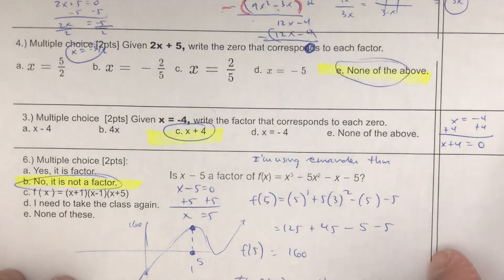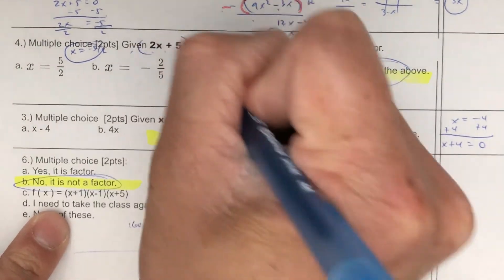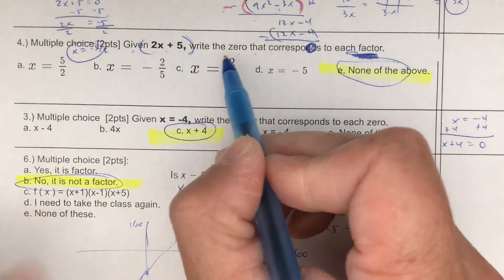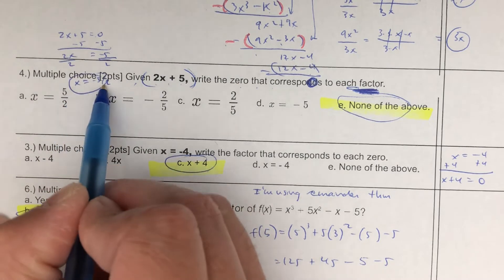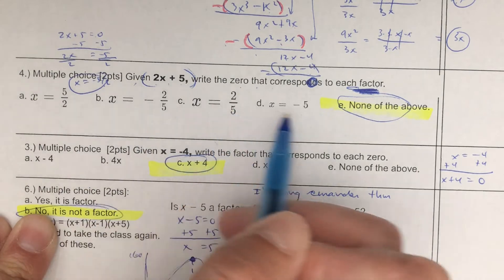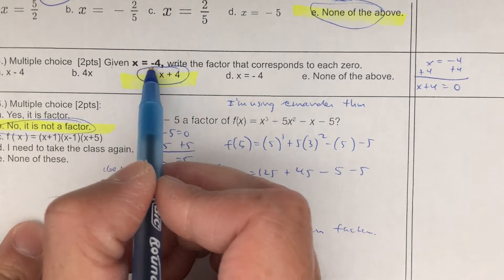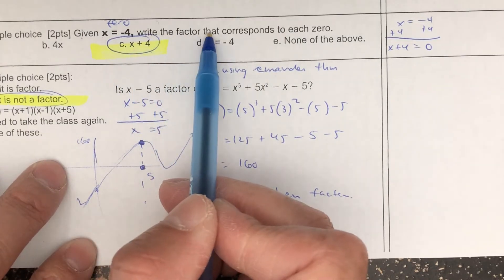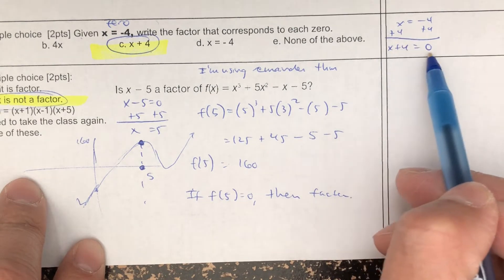Question number 4. Multiple choice. Given 2x plus 5, write the zero that corresponds to each factor. This is a factor — a common hint is that when you're factoring, the factor has parentheses around it. To find the zero, you're going to set it equal to 0. Subtract 5, divide by 2: x equals negative 5 halves. A positive 5 halves would be wrong. So the answer is E. Question number 5: you're going to go the other way. Given x equals negative 4 — this is called a zero. Write the factor. Get it equal to 0: add 4, x plus 4 equals 0. That would be choice C.